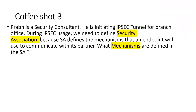Next, coffee shot three: Prabh is a security consultant initiating an IPSec tunnel for a branch office. During IPSec usage we need to define the Security Association, because it defines the mechanism that endpoints use to communicate with their partner. The question is: what mechanisms are defined in the SA? Security Associations are used for every connection by which we can identify the sender and receiver, and manage all sessions.